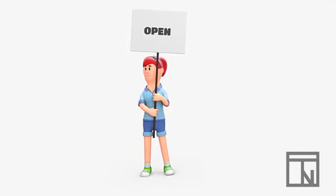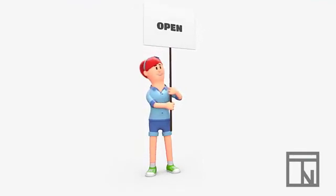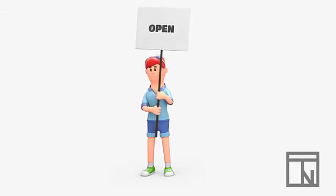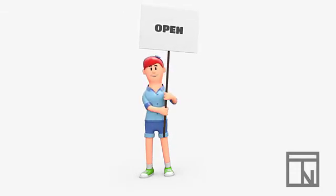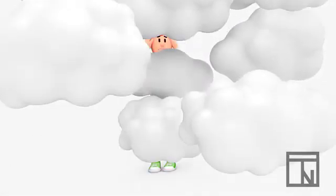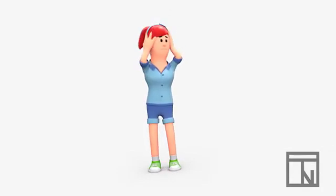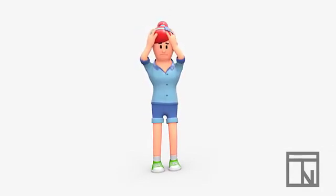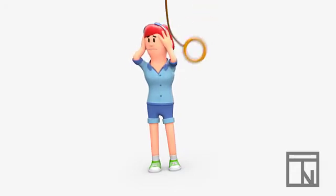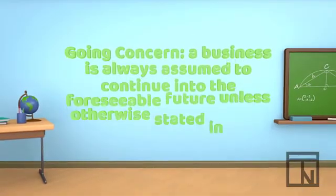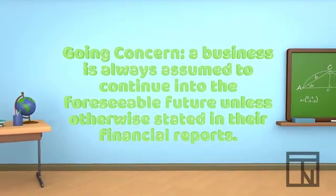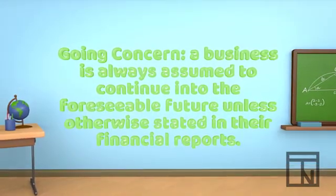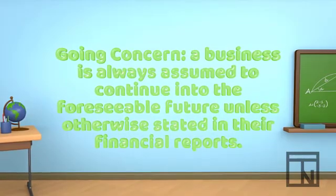In order for the bank to honestly compare Jill's business with other businesses and decide whether to grant her the loan, the bank needs to be able to assume that the business will stay open unless they are otherwise told. This is known as a going concern. It's kind of a funny name — it doesn't mean that there is a concern about the business. A going concern means that a business is always assumed to continue into the foreseeable future unless otherwise stated in their financial reports.